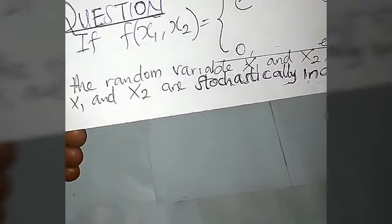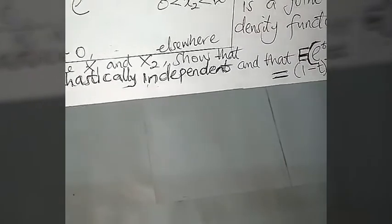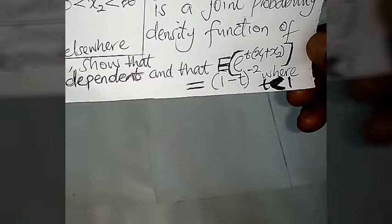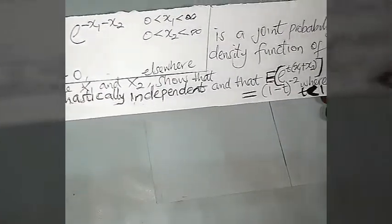We need to show that x1 and x2 are stochastically independent, and that the expected value of the exponential product of t and x1 plus x2 is equal to (1 minus t) raised to the power minus two, where t is less than one. We want to find a solution to that question.